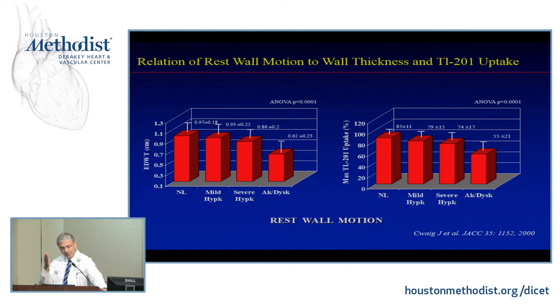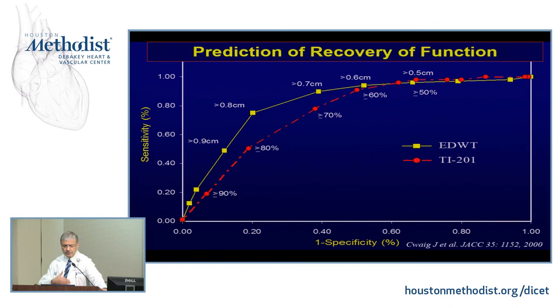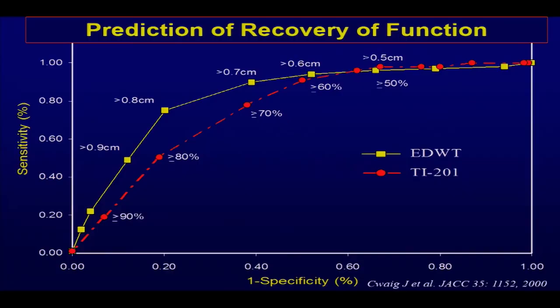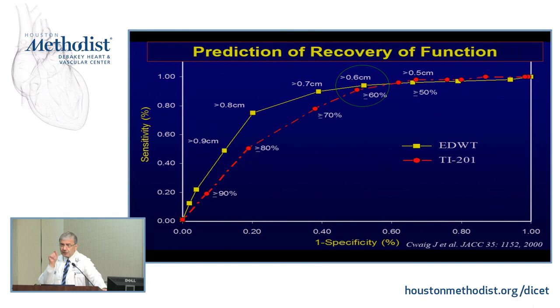The same patients had rest redistribution thallium showing the same phenomenon — lesser uptake meaning lesser viability. On an AUC curve, the 60% cutoff corresponds to about 6 mm thickness. The negative predictive value of viability — meaning the myocardium is not viable — is pretty high at that threshold, though not 100%. MRI data show situations where the heart is very thin and incredibly remodeled, yet without scar — data that Deepin will share.